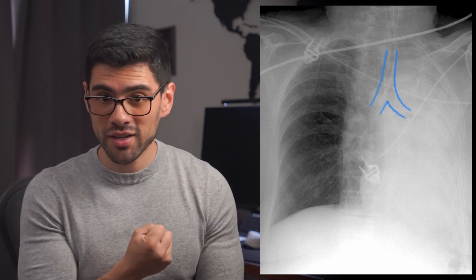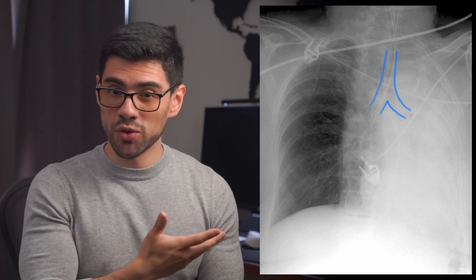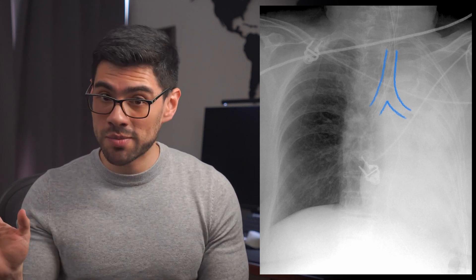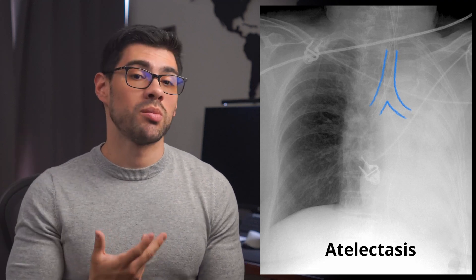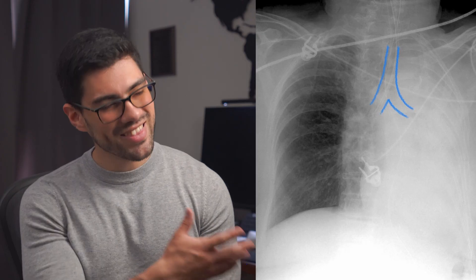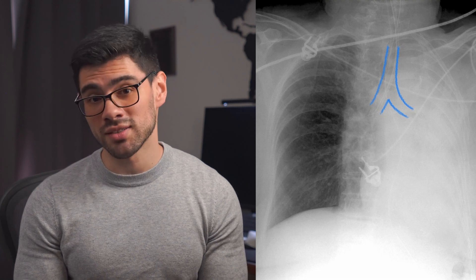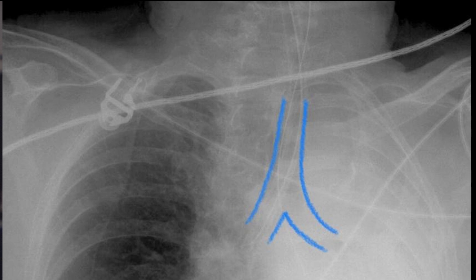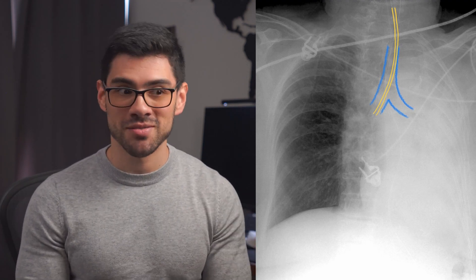In the second image, the tracheobronchial tree is being pulled towards the white lung, so we're thinking collapsed or absent alveoli. The first step is to determine which one: atelectasis is the most common diagnosis, but occasionally patients have had a lung removed — for instance, for cancer treatment. In this case, however, the diagnosis is clearly atelectasis. You can see an endotracheal tube lodged right into the right main bronchus. If you intubate a patient but only deliver oxygen to one lung, the other one collapses — and that is exactly what happened here.